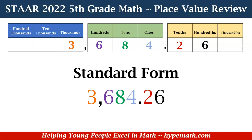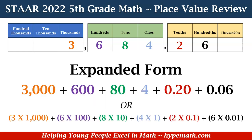Let's look at our value on the place value chart. We have a 3 in the thousands place, a 6 in the hundreds place, an 8 in the tens place, a 4 in the ones place, a 2 in the tenths place, and a 6 in the hundredths place. In expanded form, we have 3,000 plus 600 plus 80 plus 4 plus 0.20 plus 0.06. Another way to write it in expanded form is 3 times 1,000, plus 6 times 100, plus 8 times 10, plus 4 times 1, plus 2 times 0.1, plus 6 times 0.01.